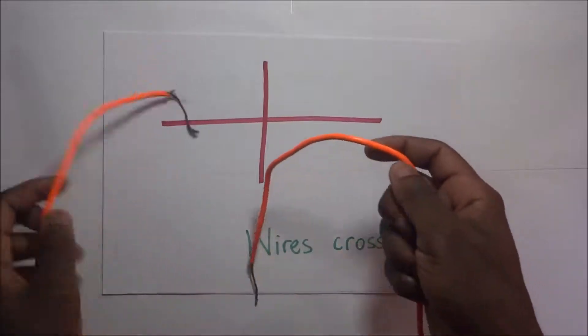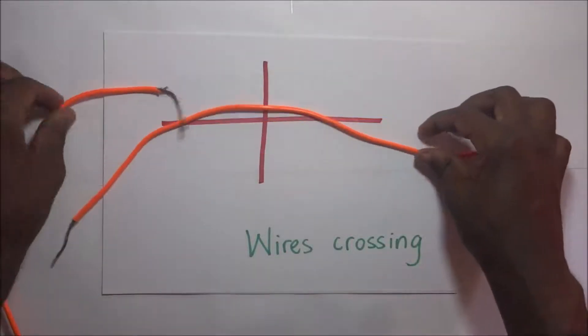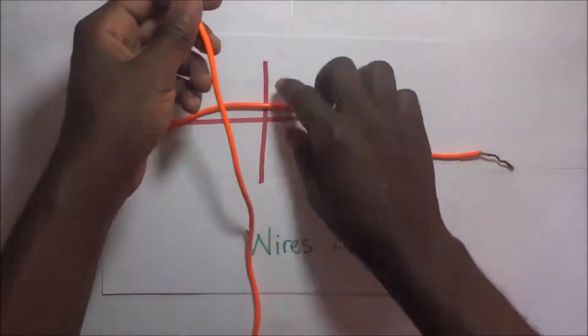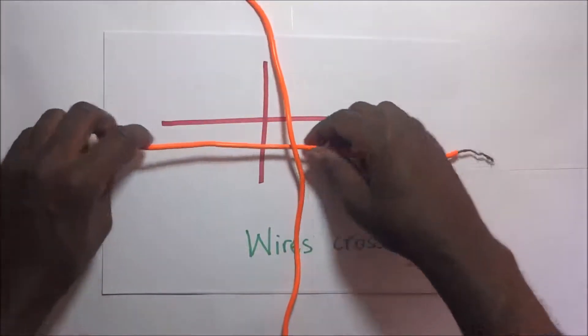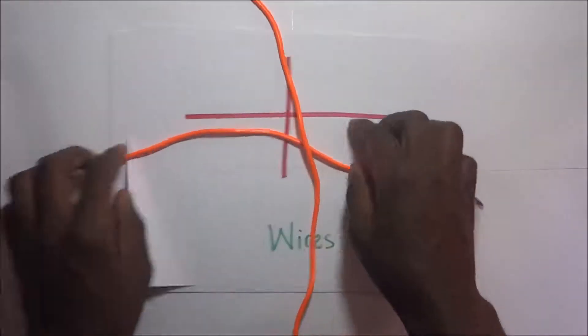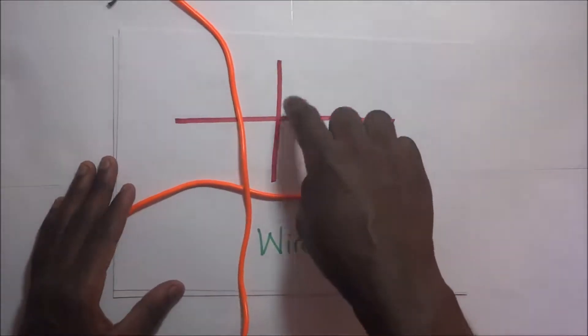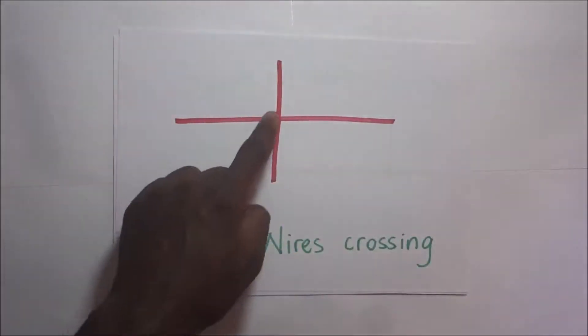For example, in my circuit, if I have this wire moving that way and this wire moving on top of it like that, to represent those two wires that are just crossing, this is how we draw it. But it's not that all the time they'll be crossing—sometimes they'll be joined.